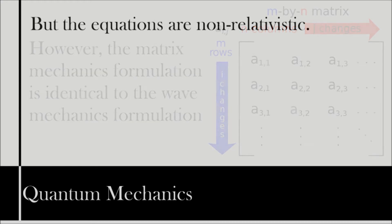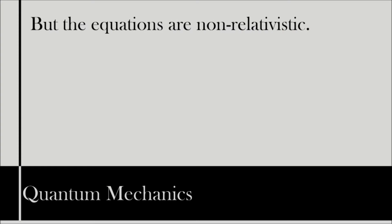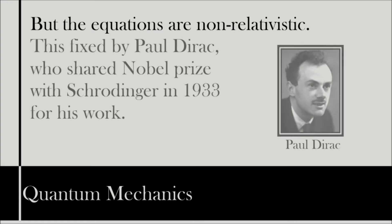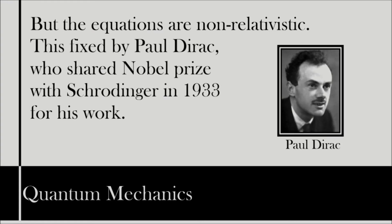Schrödinger himself made note of the relation between his wave mechanics and matrix mechanics in his 1926 papers. While the Schrödinger equations are indeed very useful, they are also non-relativistic. This was, however, rectified by the British physicist Paul Dirac, who produced a version of the equation that complied with relativity in 1928. Dirac would go on to share the Nobel Prize with Schrödinger in 1933.